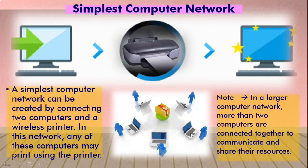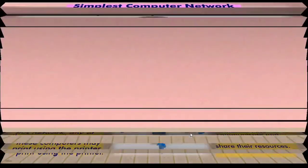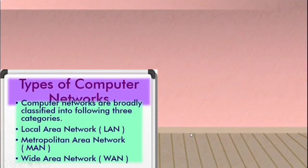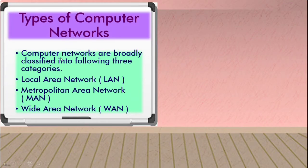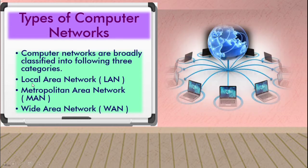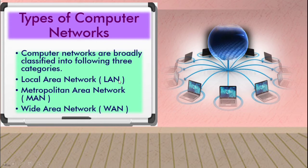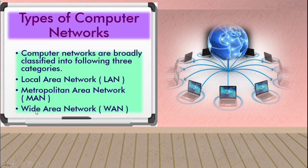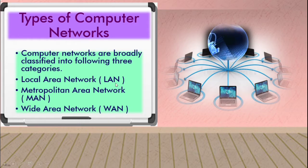Now we will see the types of computer network. Computer networks are broadly classified into the following three categories: Number 1 — Local Area Network (LAN), Number 2 — Metropolitan Area Network (MAN), Number 3 — Wide Area Network (WAN). These are the short forms of the network types.